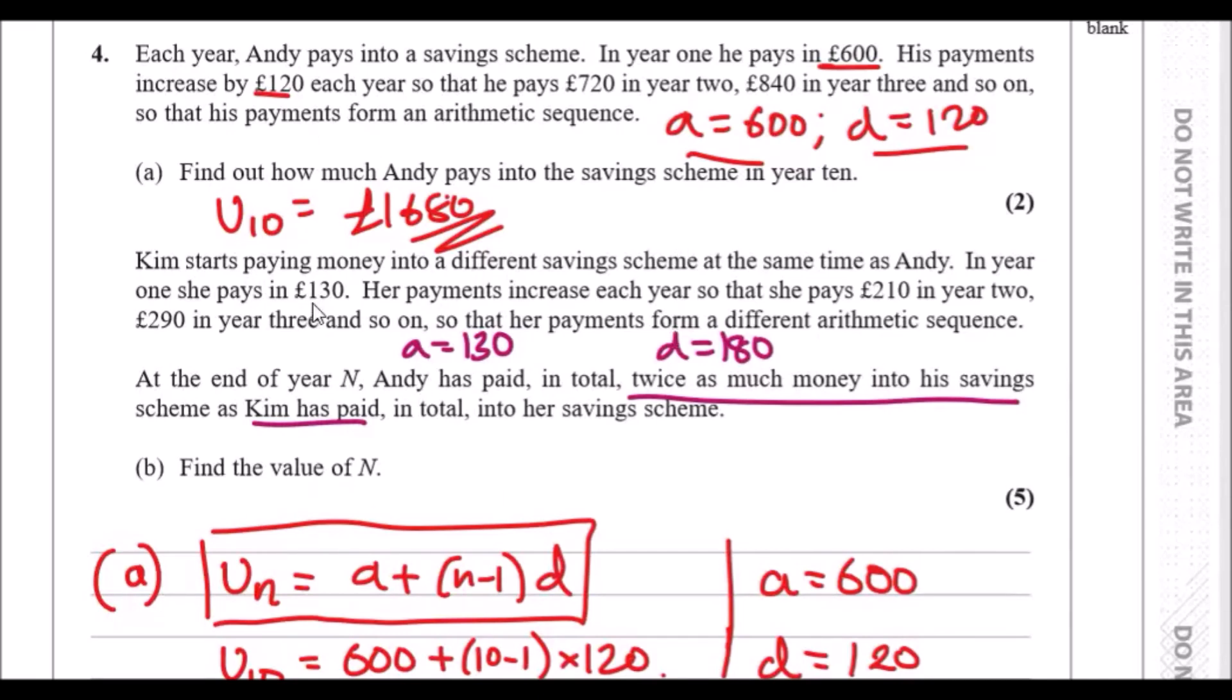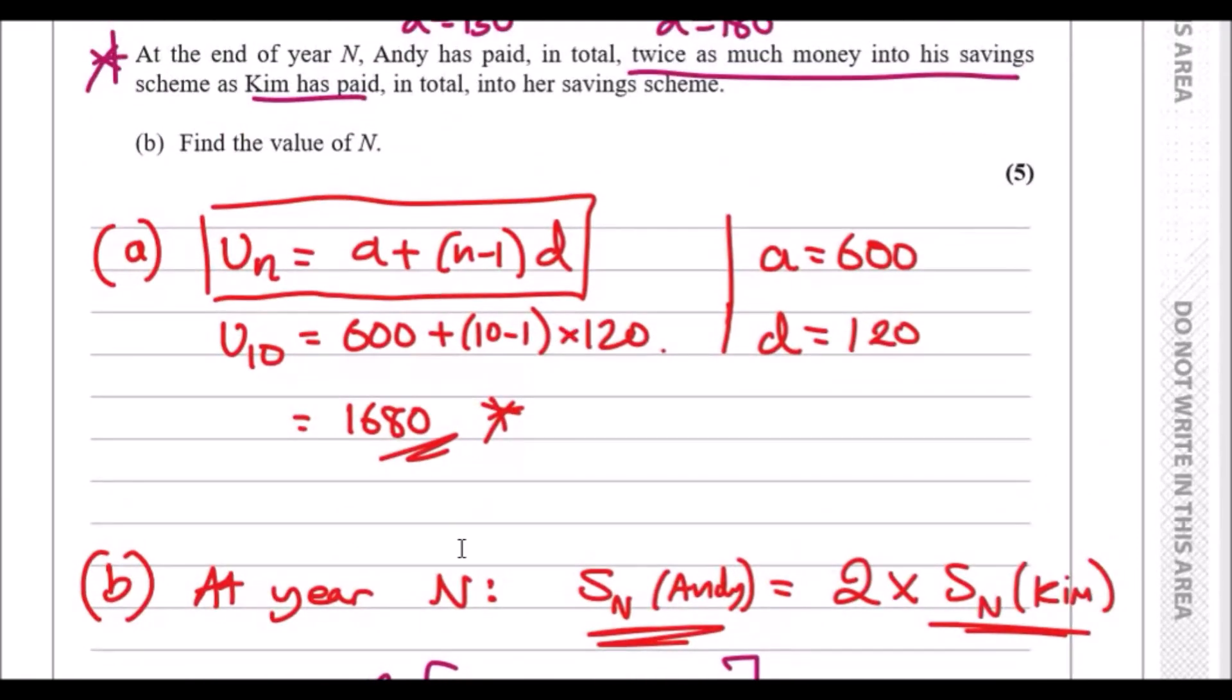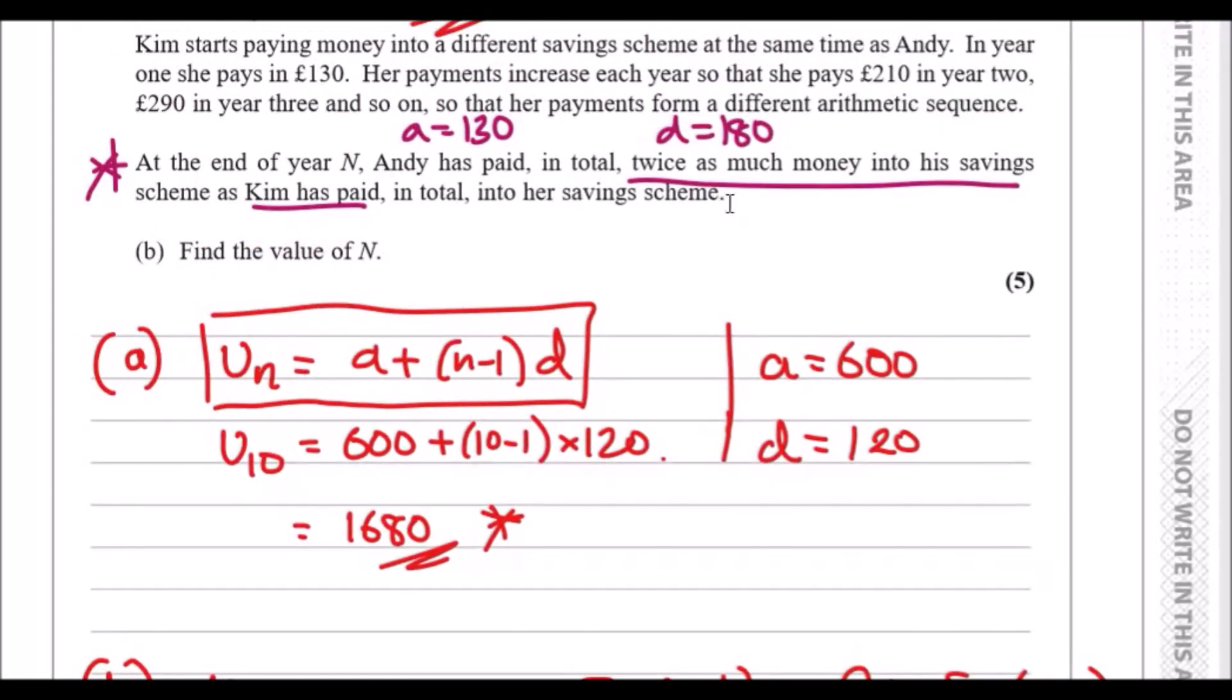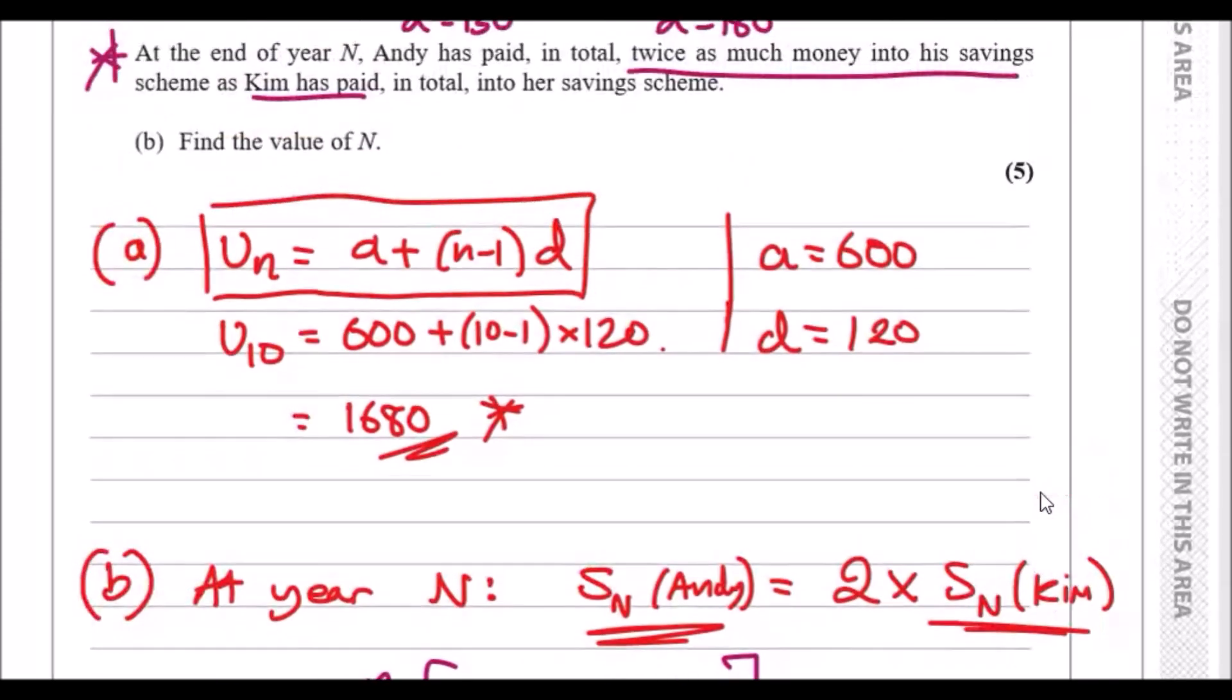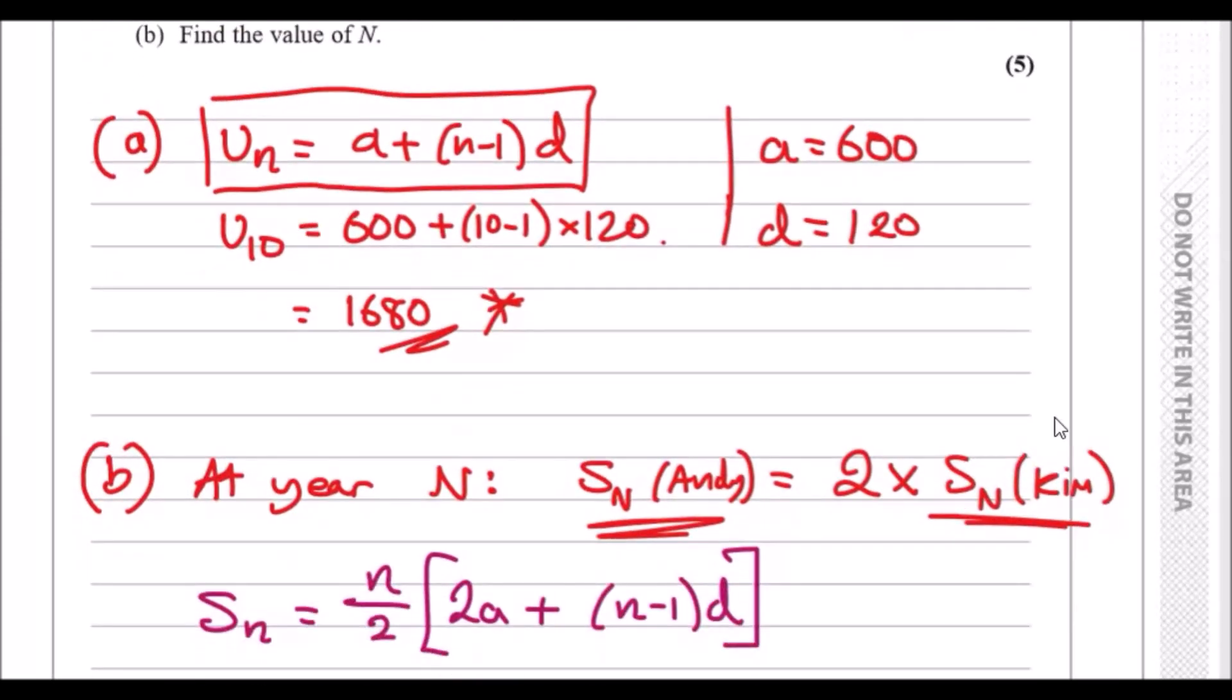Now at the end of year N, so we don't know what year exactly, Andy has paid in total twice as much money into his saving than Kim has paid. So Andy has paid whatever Kim has times two. And we go find value N. So I will start from this statement here. So part B, what I said at year N, we know that Andy paid two times the amount Kim paid. So this SN is the sum formula that I put here. So the total amount Andy paid equals two times the total amount Kim paid.